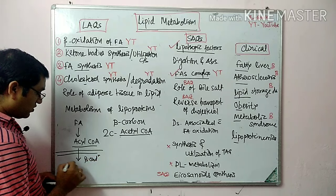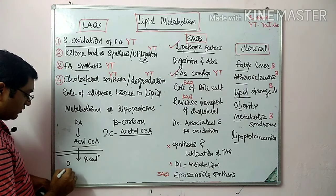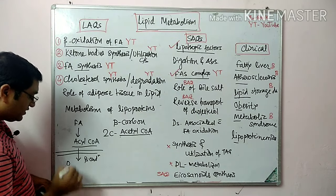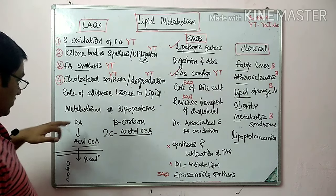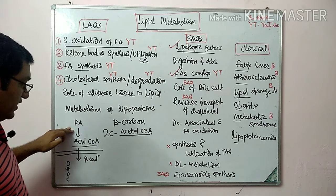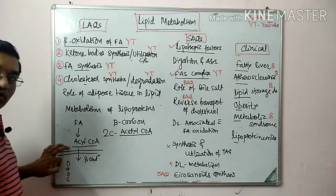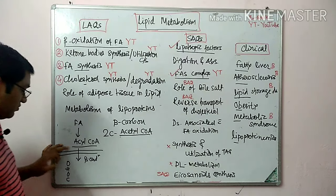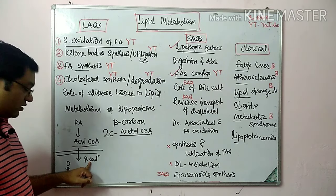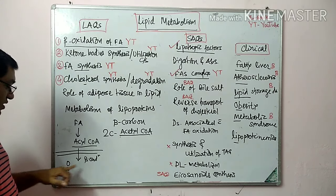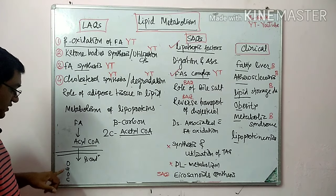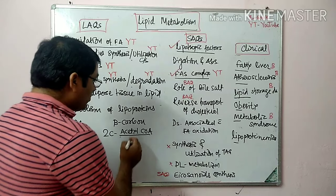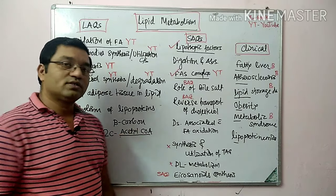The third step is beta oxidation proper. In this step, the sequence is: oxidation, hydration, oxidation, and cleavage. These are the steps of beta oxidation, which results in the generation of acetyl coenzyme A.